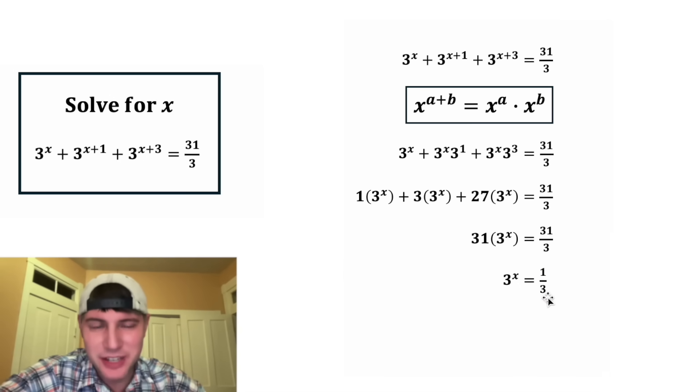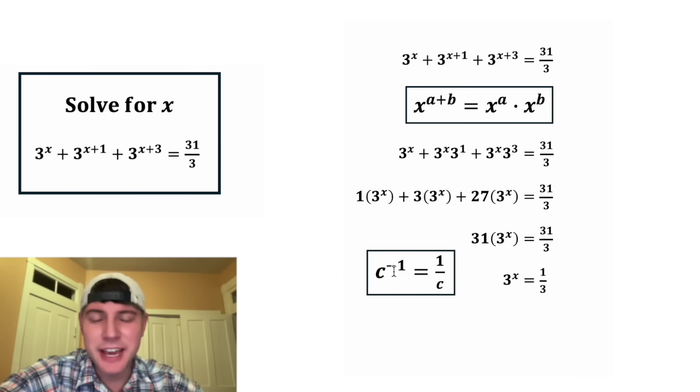And now since this three is in the denominator, it reminds me of negative exponents. Here are the notes right here. C to the negative one is equal to one over C. So we can rewrite this one third as three to the power of negative one, and that's still going to be equal to three to the power of x.